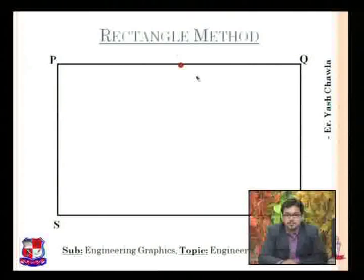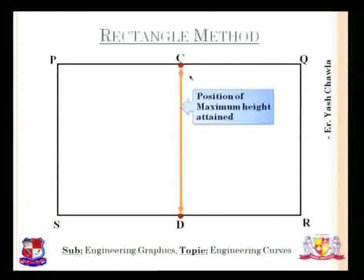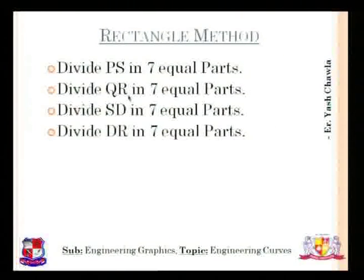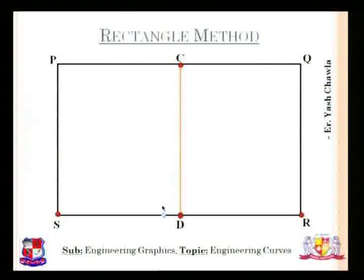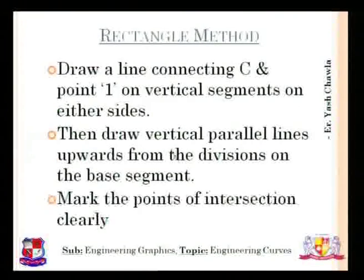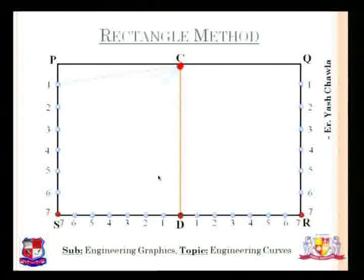Now we mark the point of maximum height. We consider that the center point will be the position of maximum height. It can be mentioned in the question how far from the initial point this maximum height is attained, and we must consider that. In the next steps we divide PS, QR, SD, and DR all into seven equal parts. These are the divisions shown on screen. Then we draw a line connecting through C and point 1 on a vertical segment on either side — from C we are drawing lines from 1 to 7 on both sides.